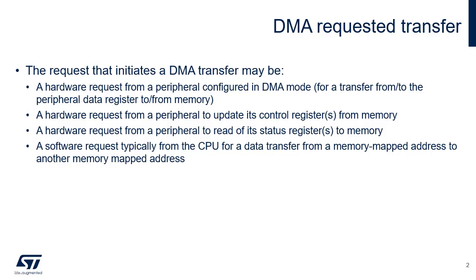To start a DMA transfer, a request is required. This request can be caused by a hardware event: from a peripheral indicating that data are ready to be transferred, from a peripheral indicating that an update of its control registers is required, or from a peripheral indicating that a read of its status registers is required.